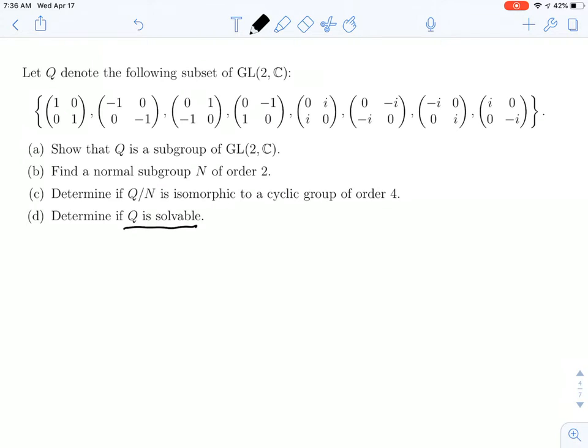So we already saw that we had a normal subgroup N which had order 2 in our subgroup of order 8. And in fact, this N was equal to plus minus the identity element.